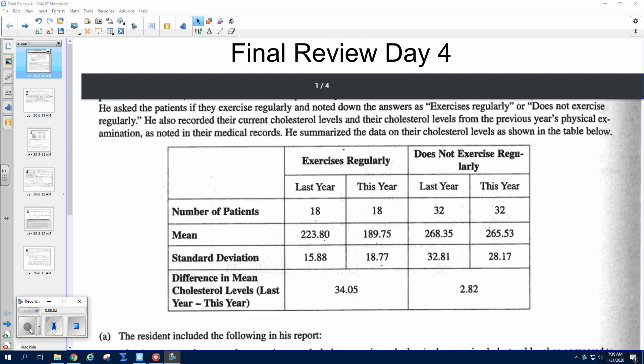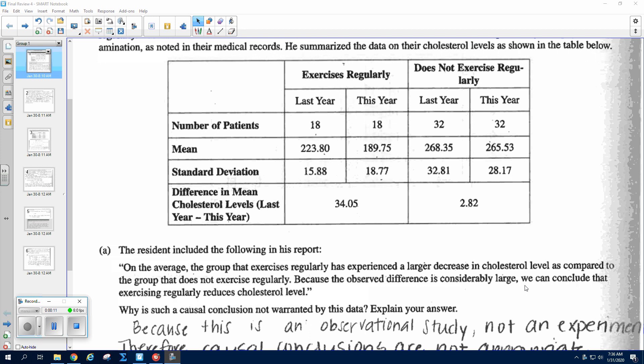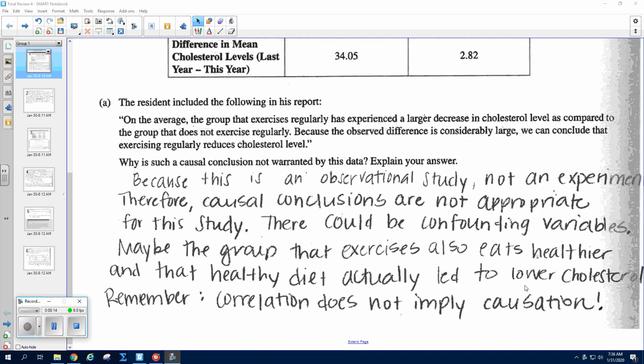Okay, so the last two free response questions on this AP review. This is number five. First of all, hopefully you guys remember that if you have an observational study, you do not have cause and effect. The only way to have cause and effect is to have an experiment, which means you included random assignment. So you can say something like: because this is an observational study and not an experiment, causal conclusions are not appropriate for this study.